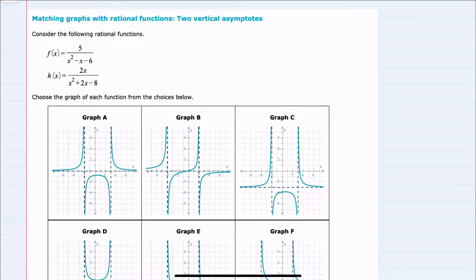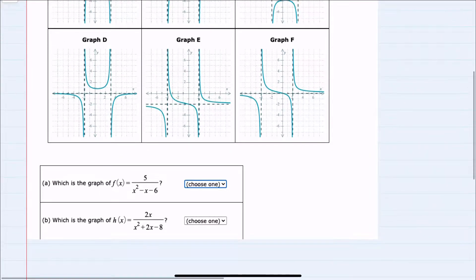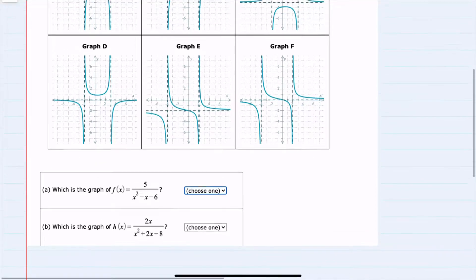In this video, I'll be helping you with the ALEKS problem type called matching graphs of rational functions to vertical asymptotes. We're given two functions here, f of x and h of x. We're asked to match the graph of f of x to one of the graphs listed, and to do the same for h of x.